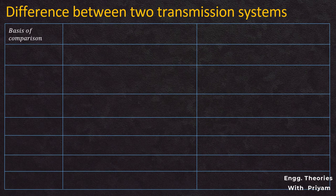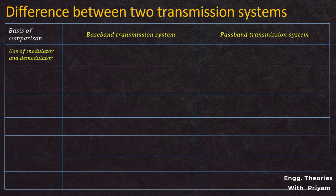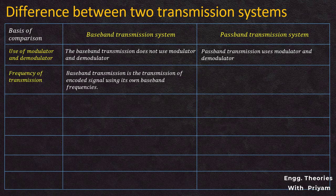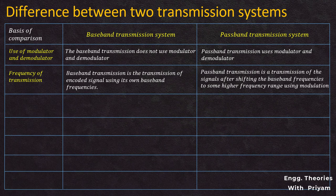Now let's see the comparison table. Regarding use of modulator and demodulator: baseband transmission does not use any modulator or demodulator, while passband transmission uses both. Regarding frequency of transmission: baseband transmission uses the signal's own baseband frequencies, whereas passband transmission shifts the baseband frequencies to a higher frequency range using modulation.